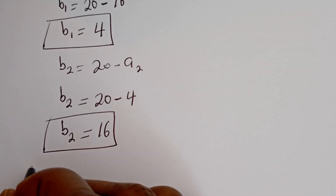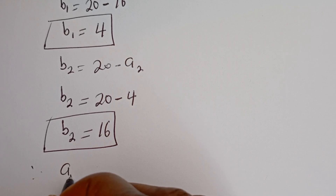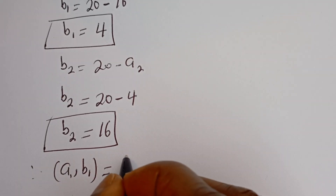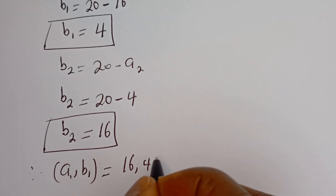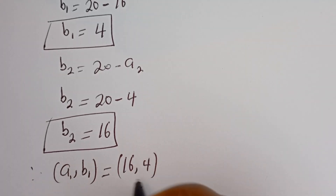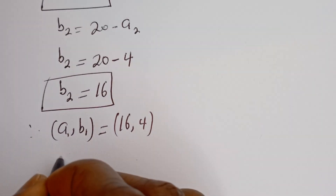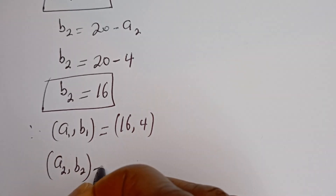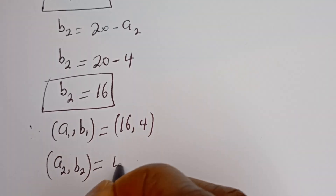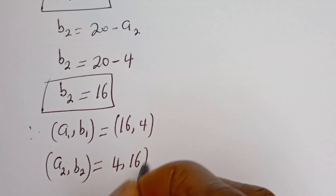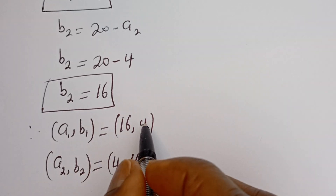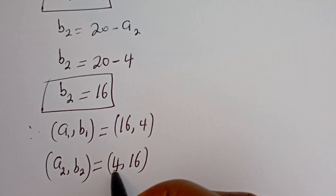Therefore, our final answers are: (a1, b1) is equal to (16, 4), and (a2, b2) is equal to (4, 16). You can see that a1 equals b2 and b1 equals a2.